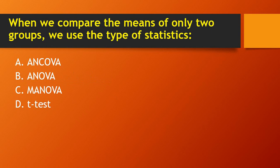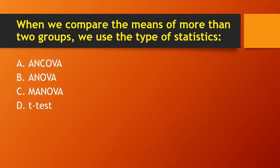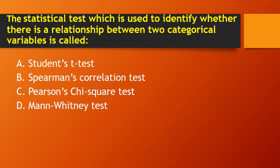Next question: when we compare the means of only two groups, we use which type of statistics — ANCOVA, ANOVA, MANOVA, or t-test? When comparing only two groups, we use the t-test. However, when we have more than two groups, we use ANOVA. The right answer for two groups is t-test.